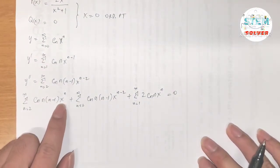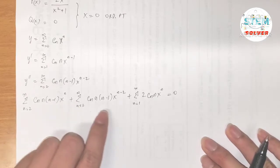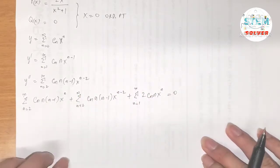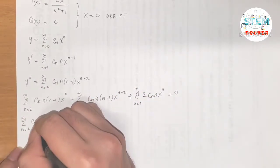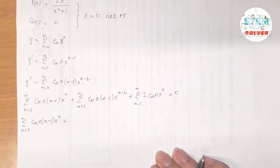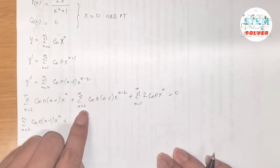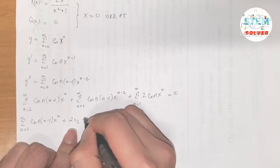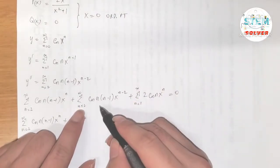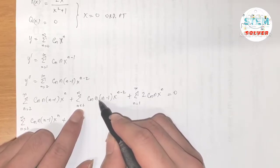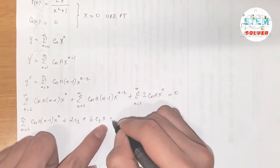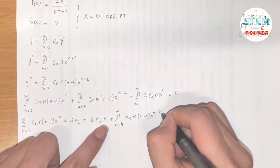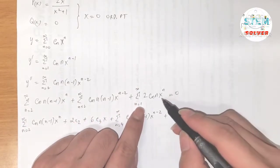Now let's look at the powers of x. Plugging in n=2 gives x², n=2 gives x⁰, and n=1 gives x¹. Since x² is the highest exponent, I need to run out terms for the two power series. For the middle series (n=2): 2·1·c₂, then n=3: 3·2·c₃·x = 6c₃·x, plus the power series from n=4 to ∞ of cₙ·n(n−1)·x^(n−2).